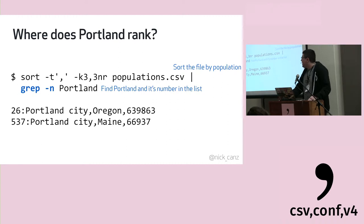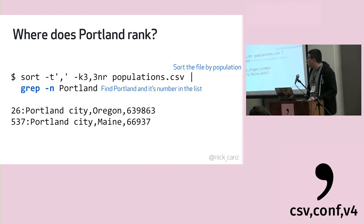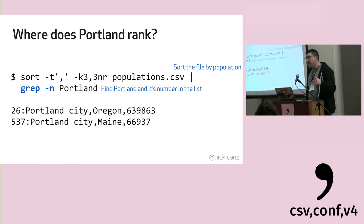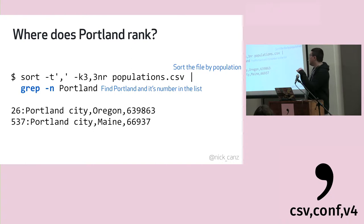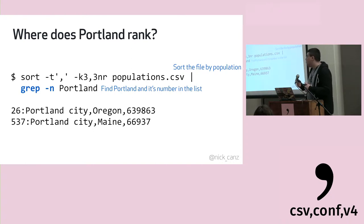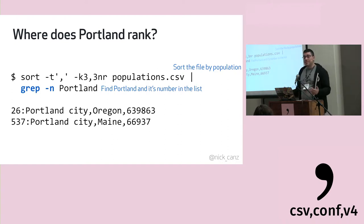Another quick question we can answer: where does Portland rank? We sort the file by population, grep for Portland, and pass the -n flag, which returns the line number. We can see that Portland, Oregon is the 26th most populous city in our file, and Portland, Maine is the 537th most populous.